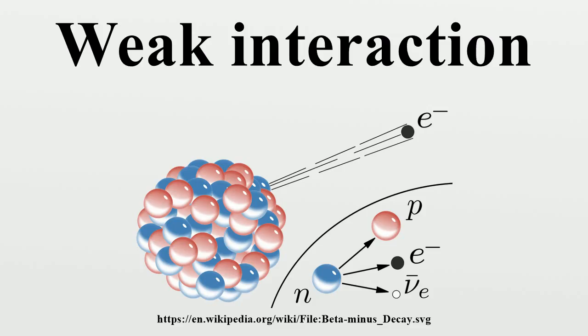For example, a neutral pion has a life of about 10^-16 seconds, while a charged pion lives about 10^-8 seconds, a hundred million times longer. In contrast, a free neutron lives about 15 minutes.